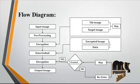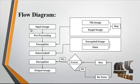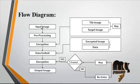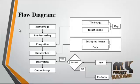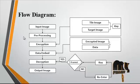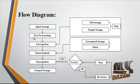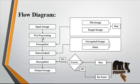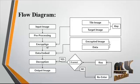Now we discuss the flow diagram. First, the input image is taken from the dataset. After getting the input image, it undergoes pre-processing, which removes noise from the image using the Gaussian filter.